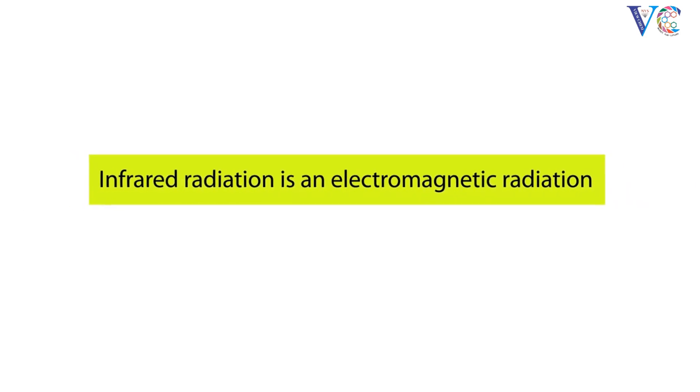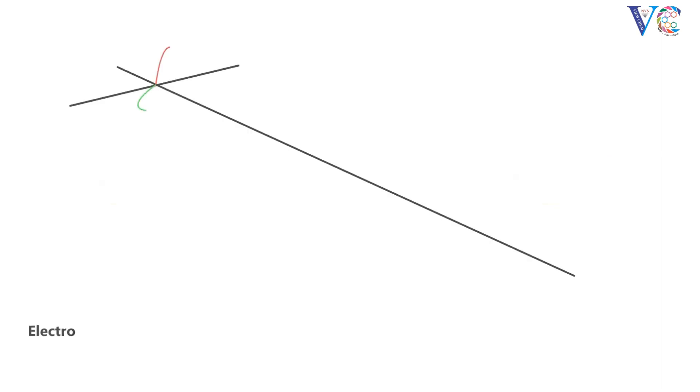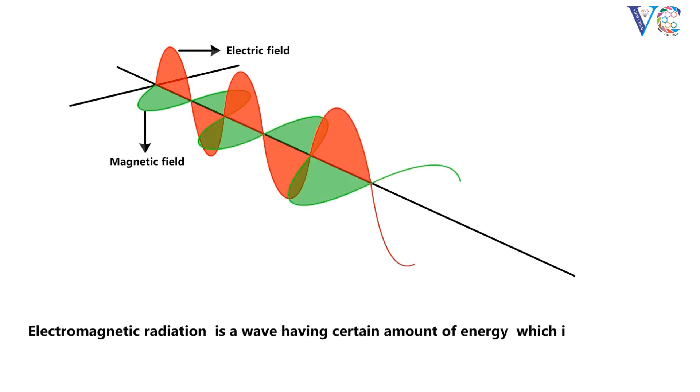Infrared radiation is an electromagnetic radiation. Electromagnetic radiation is a wave having a certain amount of energy which is propagated through free space or through a material medium.